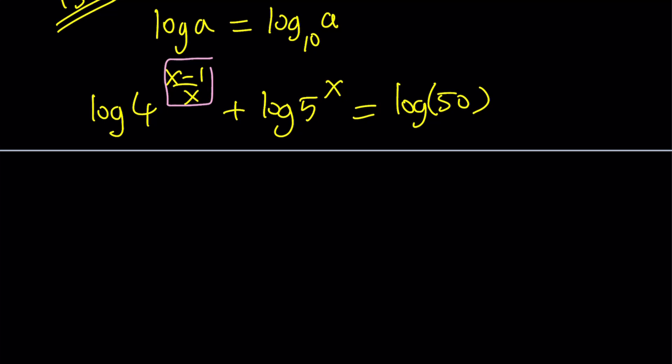Now we're going to move the powers. That's what is cool about logs, you can bring down the powers. x minus 1 over x times log 4 plus x times log 5 equals log 50. Log 50 can be written as so many different things, but I like log 10 times 5 because log 10 is 1. So I can write it as 1 plus log 5 using the product property of logarithm.